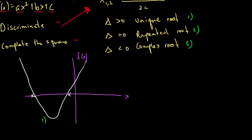Or you could have a repeated root, which means that the vertex, the tip of the parabola, only touches one point on the x axis. So it could look something like this. This would be number 2.